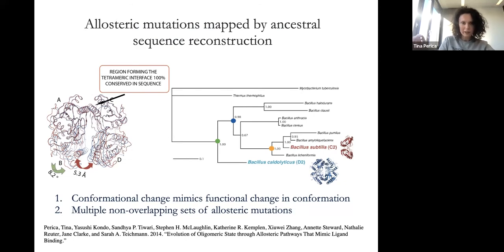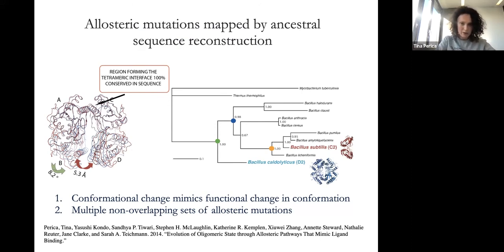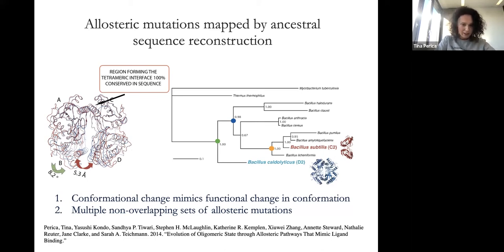Working together with Cyrus and Sarah, we found that it's actually the difference in the geometry of the dimer — the dimeric protein had the same interface as the tetrameric one but a different geometry, not compatible with tetramer formation. I then went to Jane Clark's lab and did ancestral sequence reconstruction to map the mutations that occurred during evolution that led to this difference in oligomeric state. We found two very interesting things.